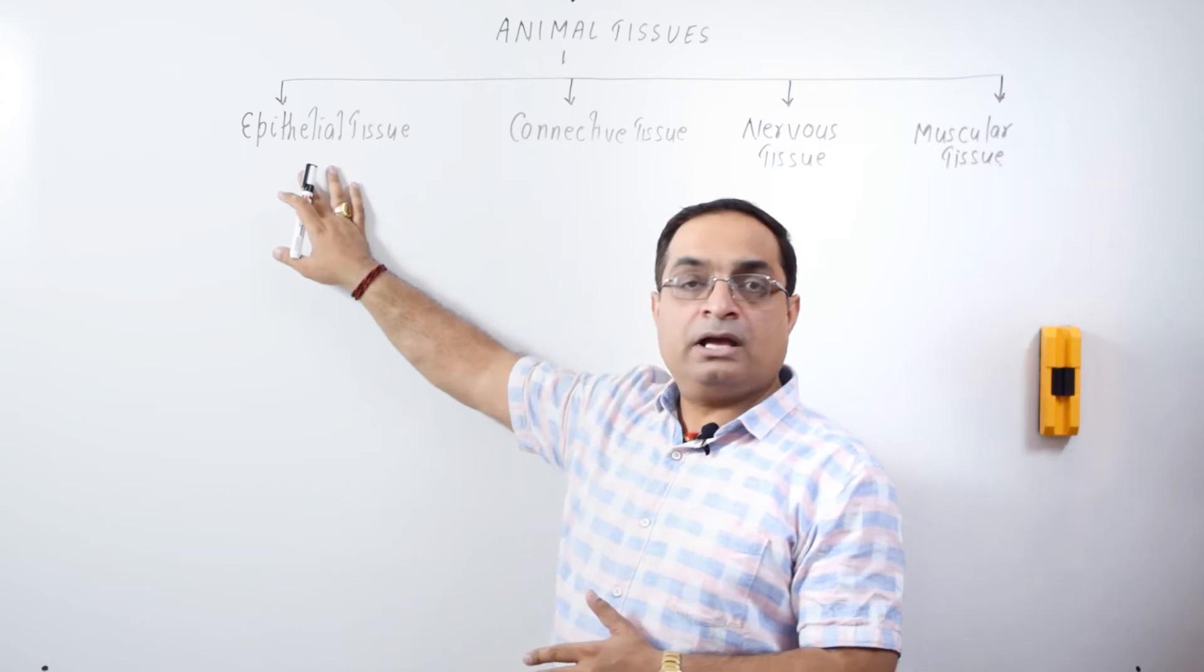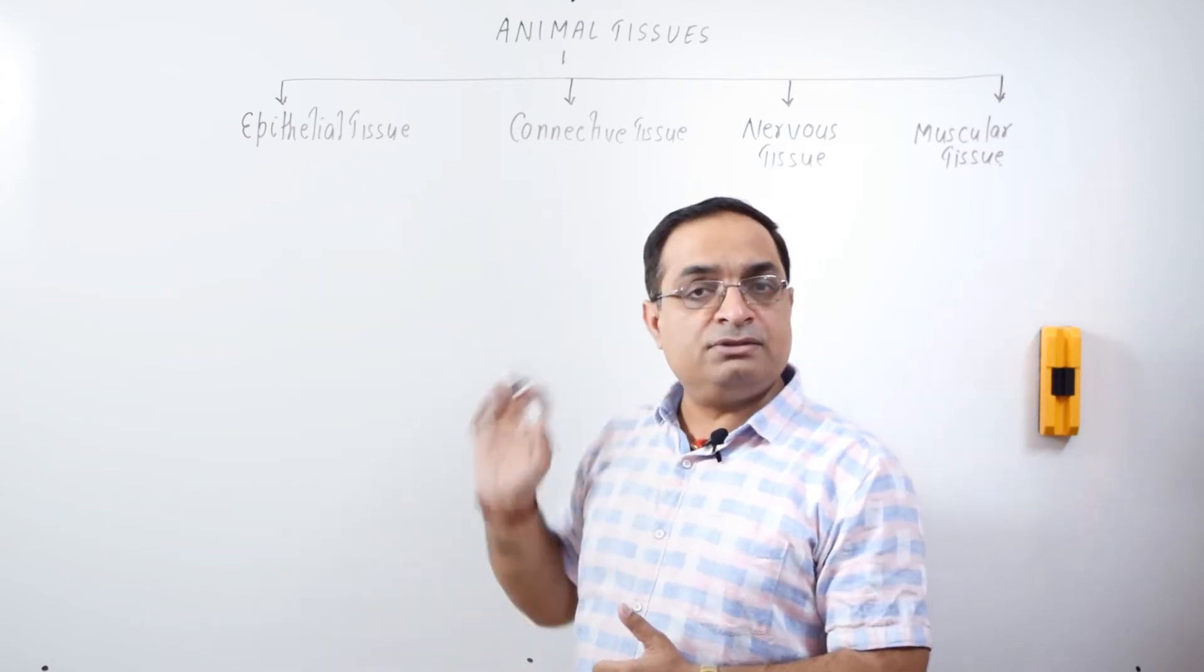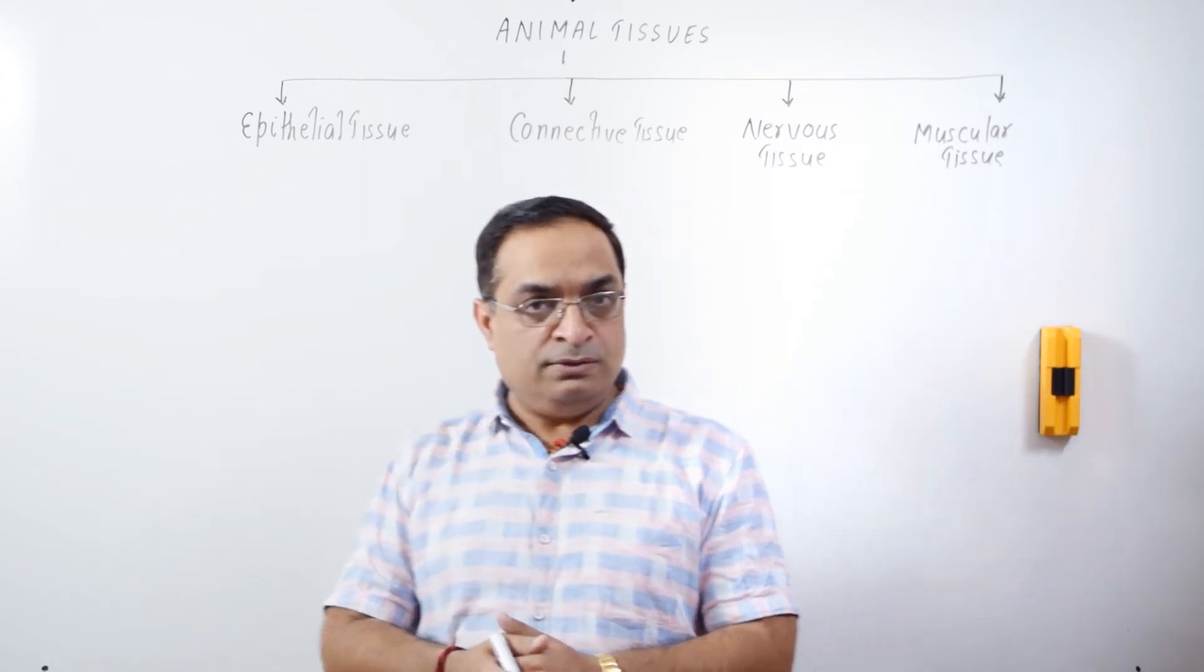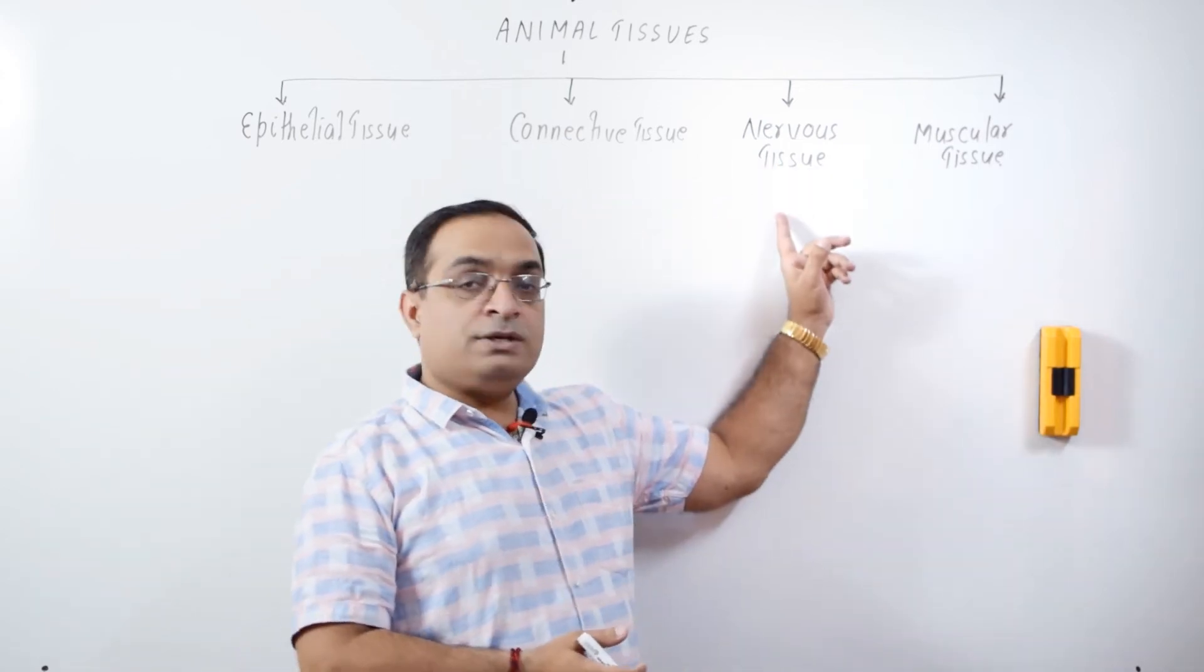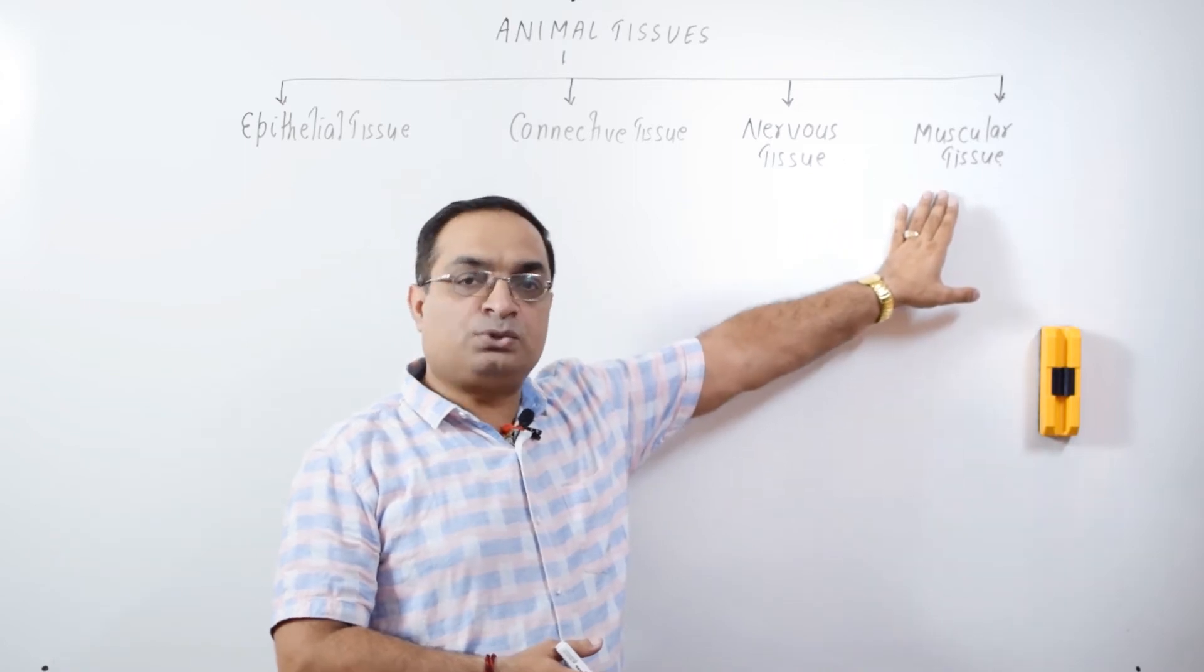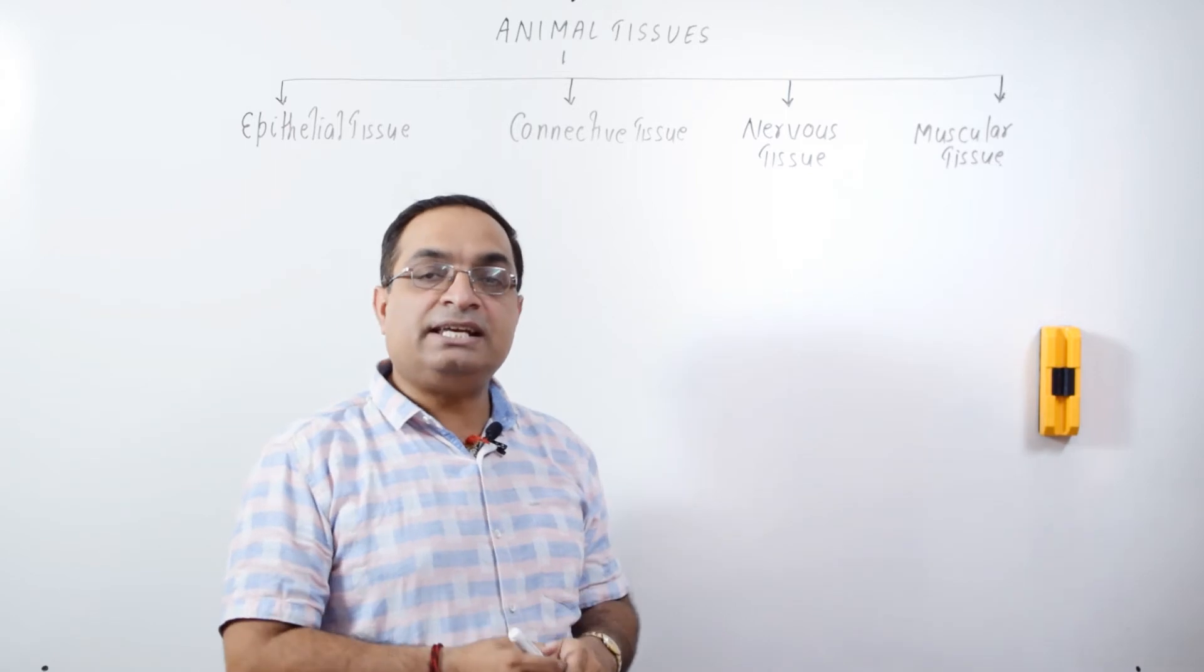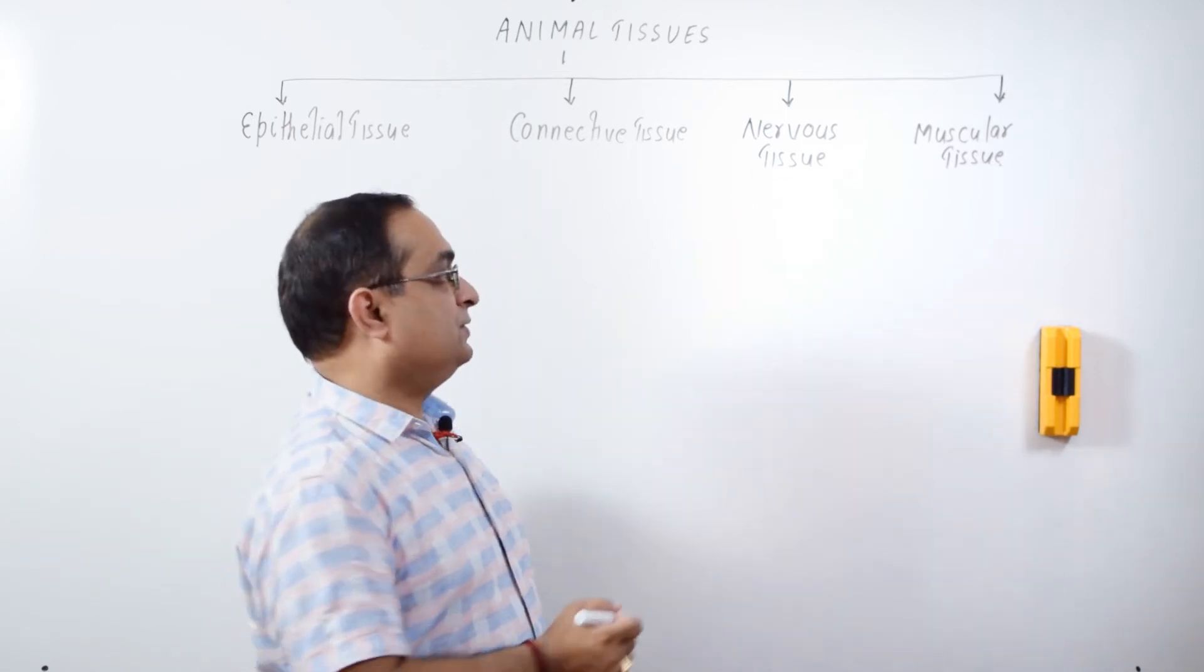Epithelial Tissue develops from Ectoderm, Mesoderm as well as Endoderm. Connective Tissue is Mesodermal in origin. Nervous Tissue is Ectodermal in origin and Muscular Tissue is Mesodermal. Out of these four tissue types, we will first study in detail Nervous Tissue.